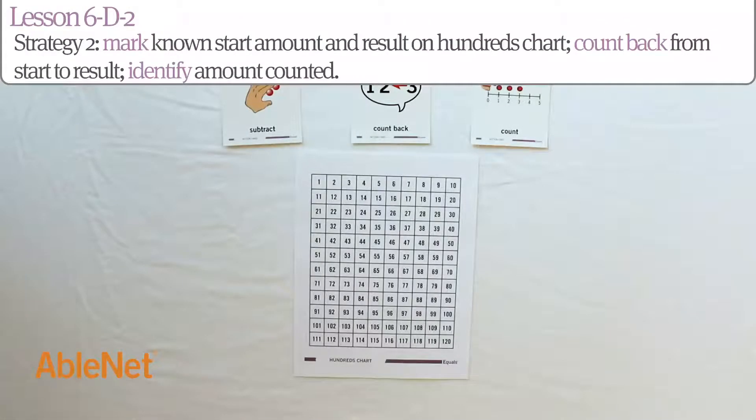For the second strategy, we're going to mark the known start amount and result on the hundreds chart, count back from start to result, then identify the amount we counted.